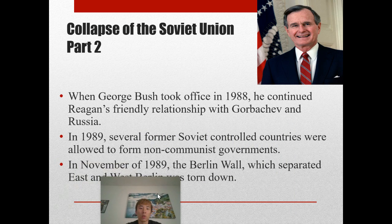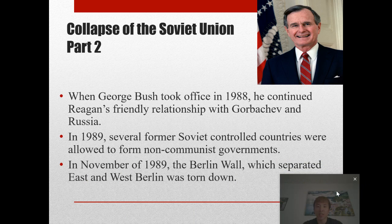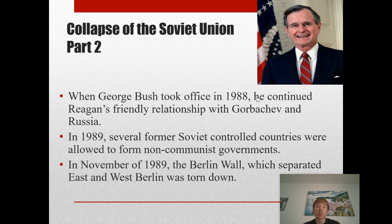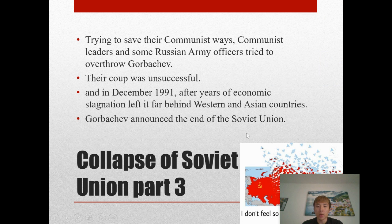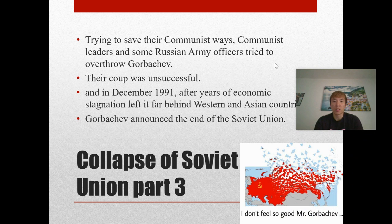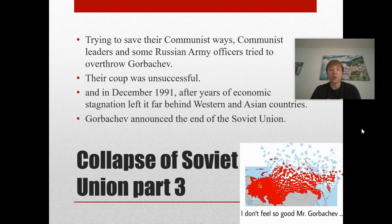When George H.W. Bush took office in 1988, he continued Reagan's friendly relationship with Gorbachev and Russia. In 1989, several former Soviet-controlled countries were allowed to form non-communist governments, and in November of 1989 the Berlin Wall, which separated East and West Berlin, was torn down. Communist leaders and some Russian army officers tried to overthrow Gorbachev, but their coup was unsuccessful. In December of 1991, after years of economic stagnation that left the Soviet Union far behind western and Asian countries, Gorbachev announced the end of the Soviet Union, which broke apart into 15 brand new countries.